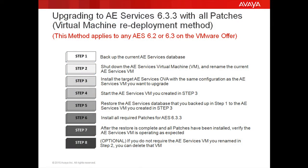There are eight steps that you will need to complete. Step 1 is to backup the current AEServices database. Step 2, shut down the AEServices virtual machine and rename the current AEServices virtual machine. Step 3, install the target AEServices OVA with the same configuration as the AEServices VM you want to upgrade — this means use the same hostname, IP address, and so on.